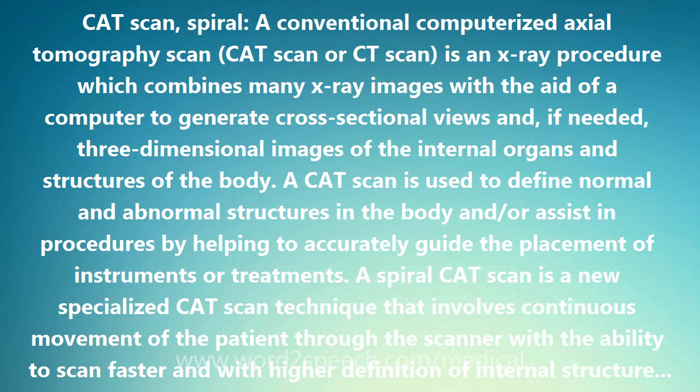This form of scanner may be particularly helpful in the rapid evaluation of severe trauma injuries, such as those sustained in automobile accidents. A spiral CAT scan is also referred to as a helical CAT scan.